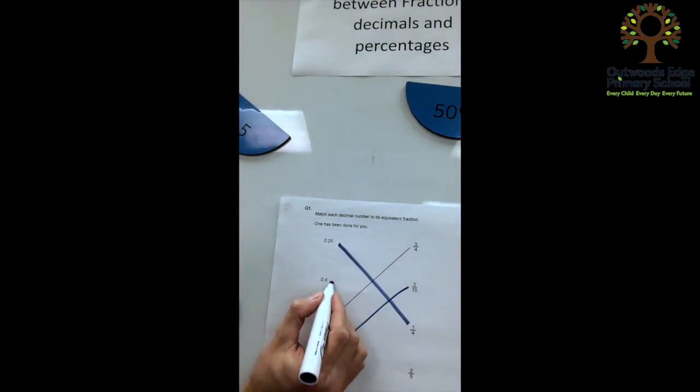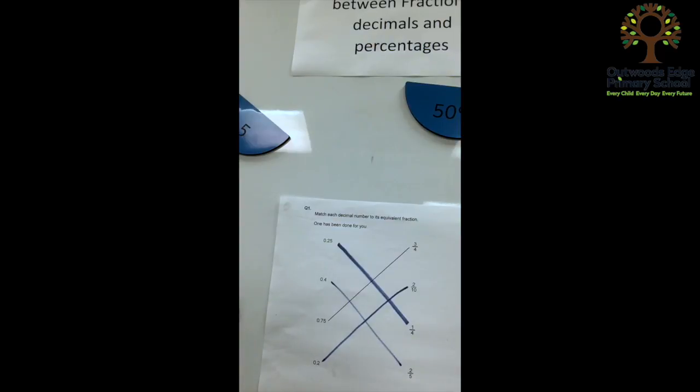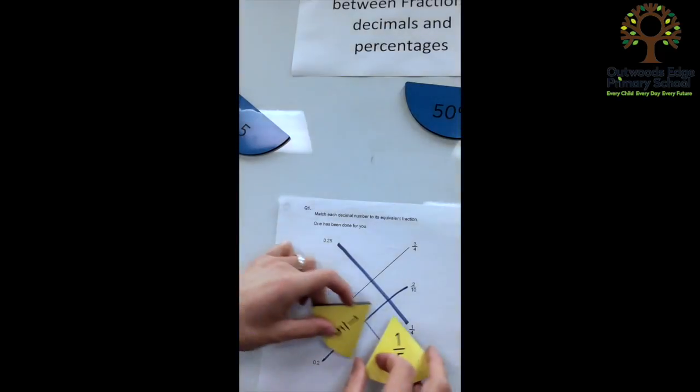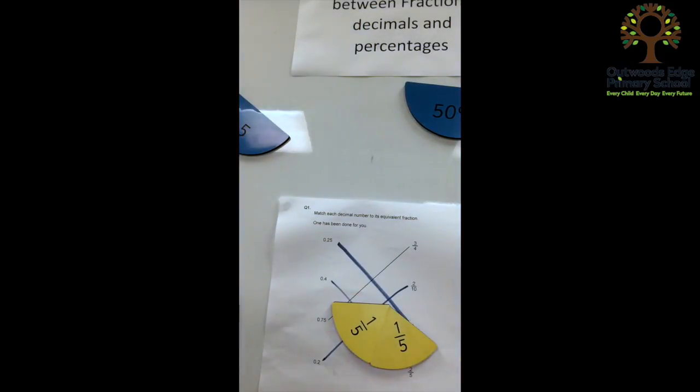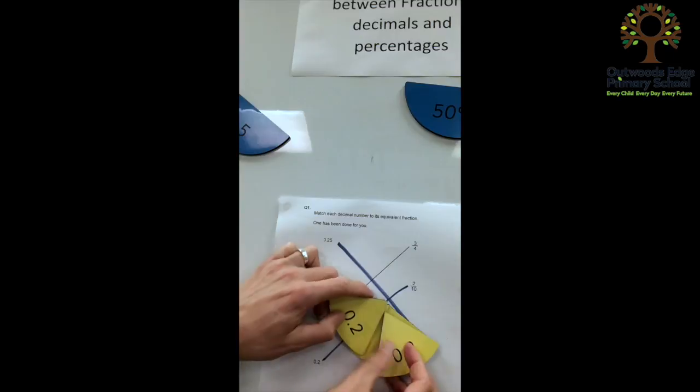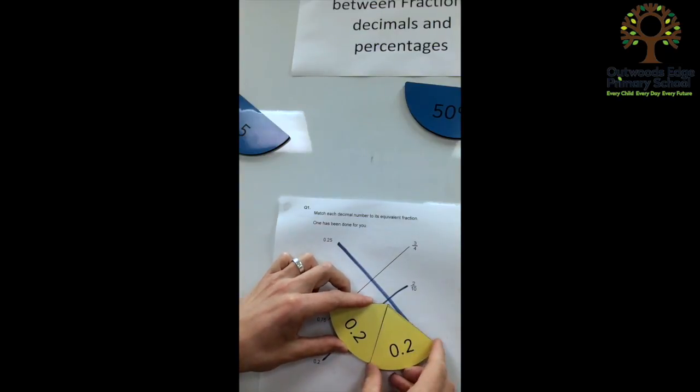Which just leaves us with 0.4 and 2 fifths. And I can just prove to you that that is 0.4, because here are 2 fifths, and over the top of that, I can put 2 0.2s. 0.2 add 0.2, 0.4.